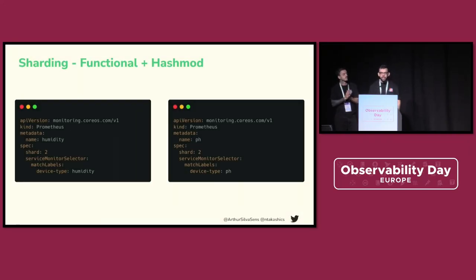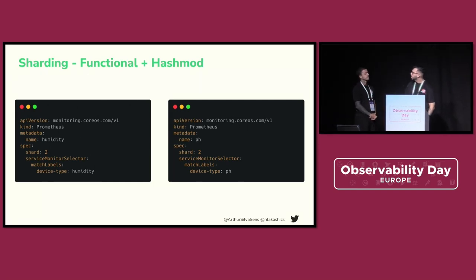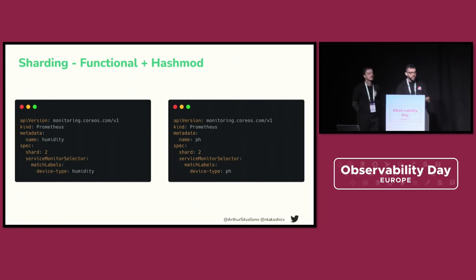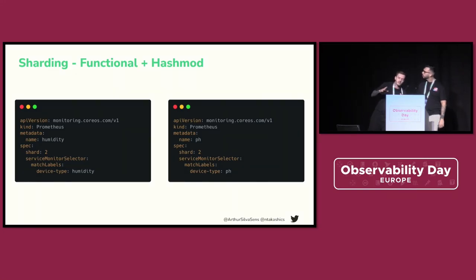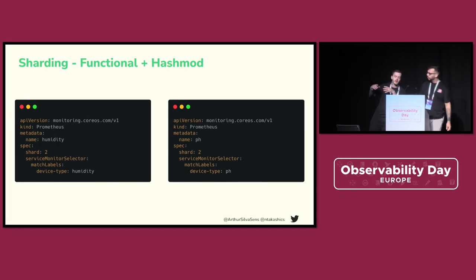If we have two different strategies, why not mix both? If you have a group of targets that is big enough and you need to contain the amount of resources your Prometheus is using, you can mix functional sharding and hash mod sharding. You just need to play with the label selectors, namespace selectors, and the shard spec. This is commonly used when you know one group is a lot bigger than the other and you might want to do hash mod sharding on top.